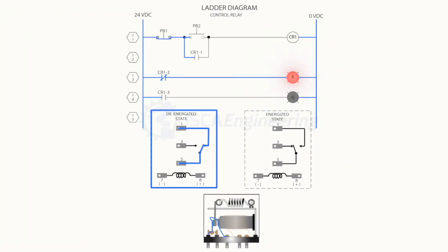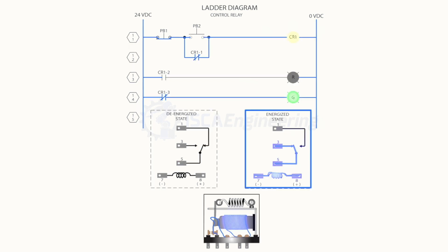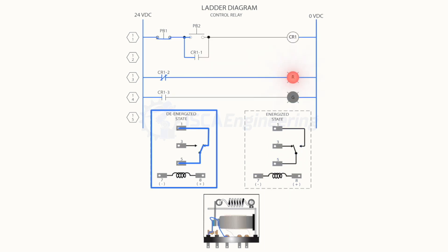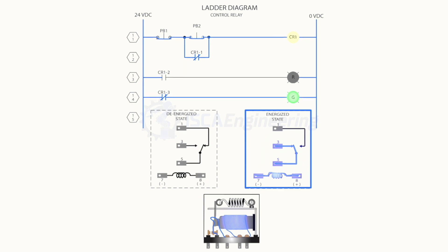In the de-energized state, the normally closed contacts allow current to flow through until the contacts change state. In the energized state, current flows through the normally open contacts until the contact states change. In the example, when de-energized the red indicating light will be on. After the coil is energized, the red indicating light will go off and the green indicating light will come on until the coil is de-energized.